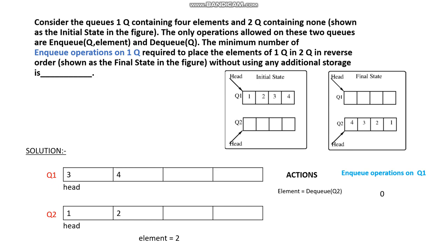So what we will do to maintain reverse order — we will DEQ from Q2 and again ENQ into Q2. The next action is DEQ from Q1 and ENQ in Q2, then DEQ from Q2 and ENQ in Q1. We are performing this action to maintain Q2 in reverse order.